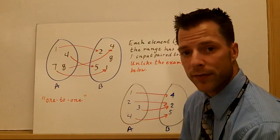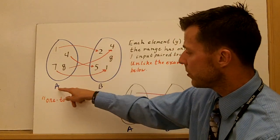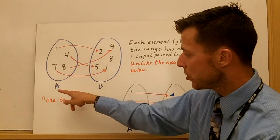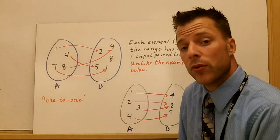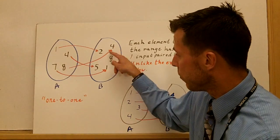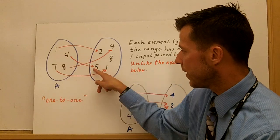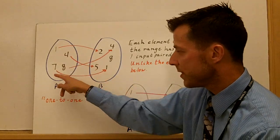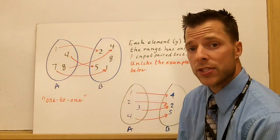So here's an example of a function that is one-to-one. Notice that each, we have two sets, A to B, and B is our range and A is our domain. So each y value is paired with only one x. Four is paired with eight, two is paired with one, five is to four, and one is to seven. This is a one-to-one function. It's injective.